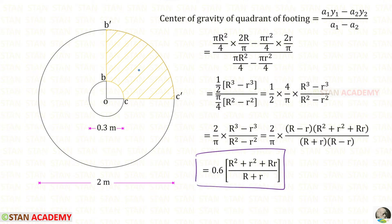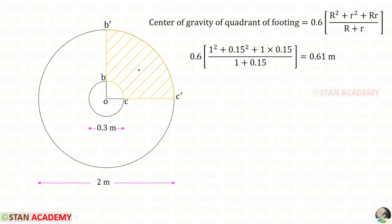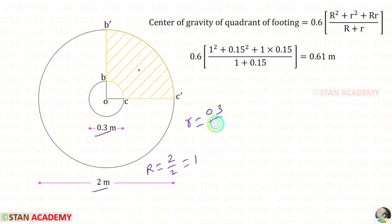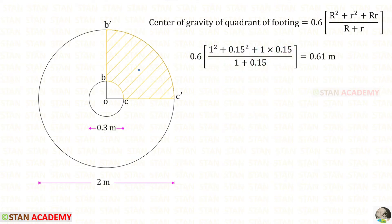It is not necessary to derive this formula — if you remember it, you can write it straight away. Let us apply the values: the diameter of the footing is 2 m, so R equals 1 m. The column diameter is 0.3 m, so small r equals 0.15 m. After calculating, we get the center of gravity distance as 0.61 meter.